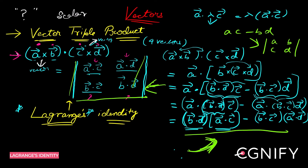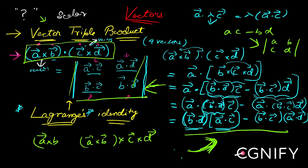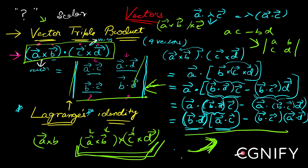Sometimes you can get a question directly based on this, not always, which is why I'm not calling it extremely important. Now let's look at the last subtopic under vector triple product: where does the vector a × b × c lie? We'll also see where (a × b) × (c × d) lies. Once we understand this, we can use that understanding to answer many other questions.